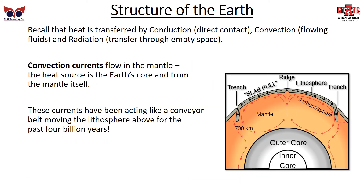Heat is transferred by conduction (direct contact), convection (flowing fluids), and radiation (transferred through empty space). Convection currents flow in the mantle, with the heat source being the Earth's core and from the mantle itself. You can see currents of convection carrying heat up through the mantle. These currents have been acting like a conveyor belt, moving the lithosphere above for the past 4 billion years.